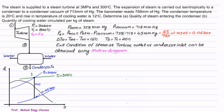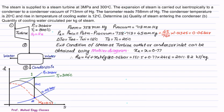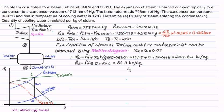From the intersection point we read the dryness fraction line, which passes approximately through X2 = 0.77 at the condenser inlet. Knowing X2, we calculate H1 = HF + X2·HFG at 0.06 bar, giving approximately 2011.82 kJ/kg. The enthalpy at the condenser outlet H2 = HF at 20°C (condensate temperature) is 83.9 kJ/kg from the steam table.